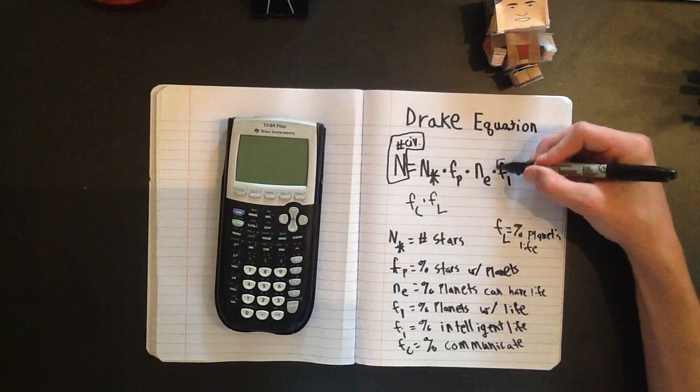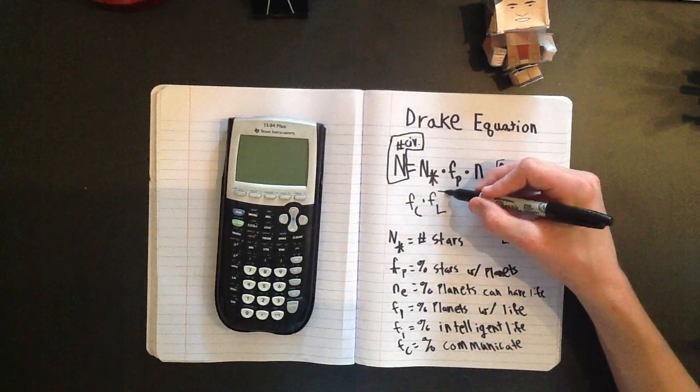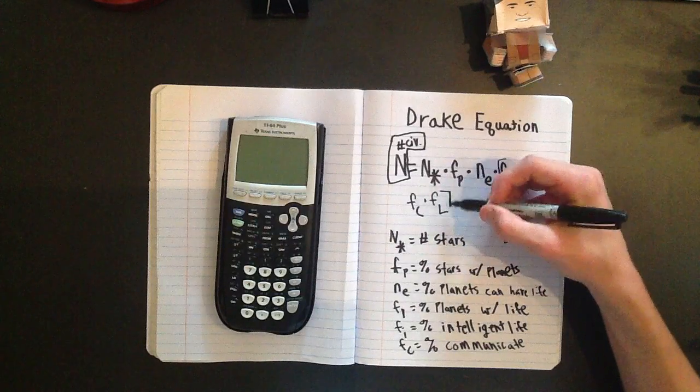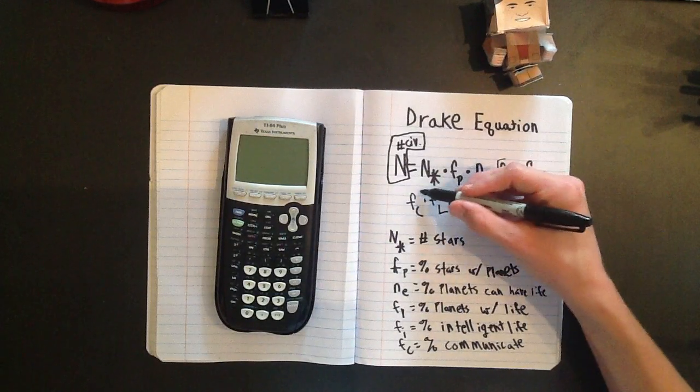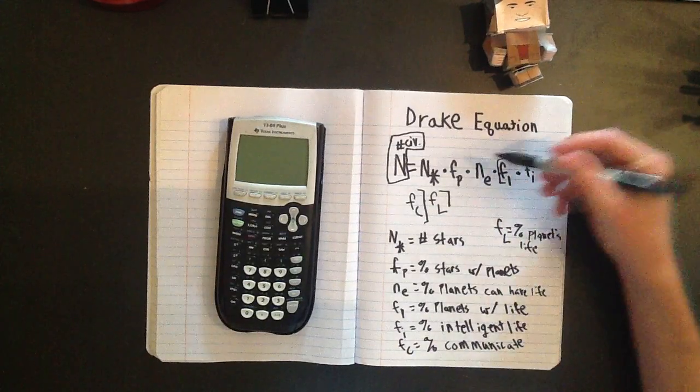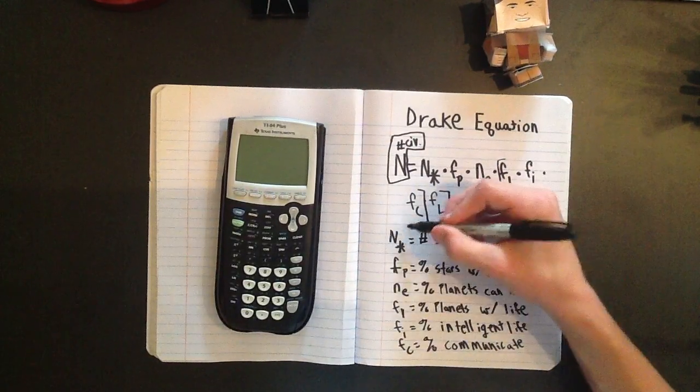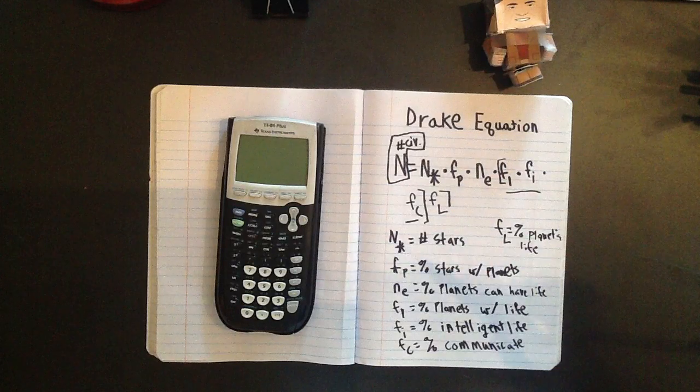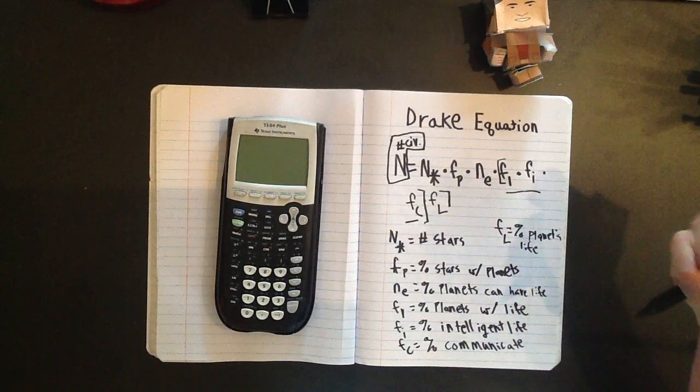But these guys right here, from F sub L, those with life, and this you can calculate. But down to about here, that is incredibly hard to calculate, because we have no evidence of life besides our own.